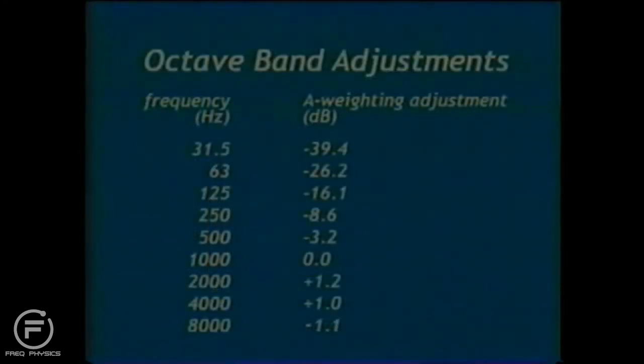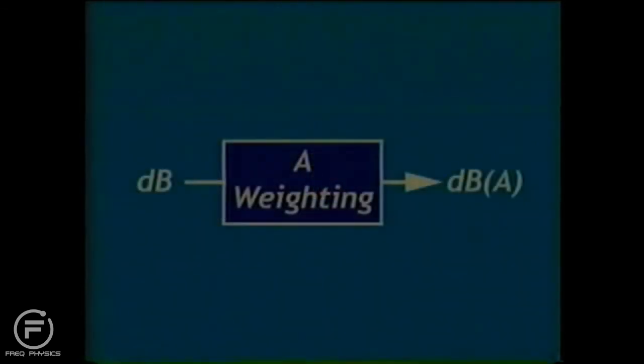This is the A-weighting plot in tabular form for octave bands. For each center frequency shown, a dB adjustment value is given. For example, for the 125 Hz octave band, a negative 16.1 dB adjustment should be applied. The 500 Hz band requires a negative 3.2 dB adjustment. The 1,000 Hz band, which can be thought of as the reference frequency for A-weighting, has no adjustment. And the 2,000 Hz band requires a positive 1.2 dB adjustment in sound pressure level. A sound pressure level, with A-weighting applied, is often stated in units of dBA. The A-weighted sound level is the most widely used measure of environmental noise and is internationally accepted.